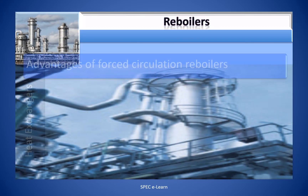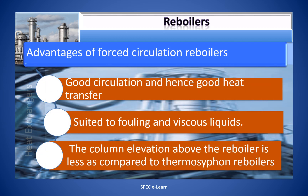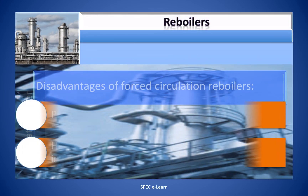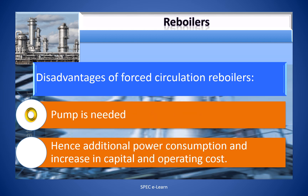The advantages of forced circulation reboilers are: 1. Good circulation and hence good heat transfer. 2. It is suited to fouling liquids. 3. The column elevation above the reboiler is less compared to the thermosyphon reboiler. The disadvantages are: 1. A pump is needed. 2. Additional power consumption and an increase in capital and operating cost.